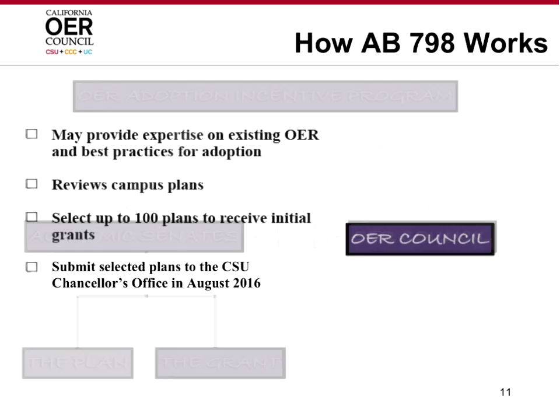The OER Council, on which there are three representatives from the CSUs, CCCs, and UCs, plus a representative from San Jose State, will be reviewing these plans. We are providing expertise on existing OER and best practices for adoption through a series of webinars and office hours held from now until June. We will review the campus plans over the summer and select up to 100 plans to receive the initial grant between $10,000 and $50,000 per school, and then submit those plans to the CSU Chancellor's Office in August of 2016. It was anticipated that the monies would go to the colleges by November.